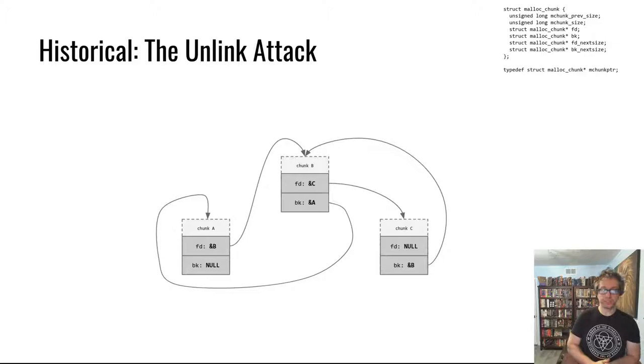And you will set the forward address of the chunk behind your chunk to the chunk in front of your chunk. This is better actually shown than described. Let me show it to you. Consider this scenario where we have three allocations: chunk A, chunk B, and chunk C. I just displayed the forward and back pointers here.